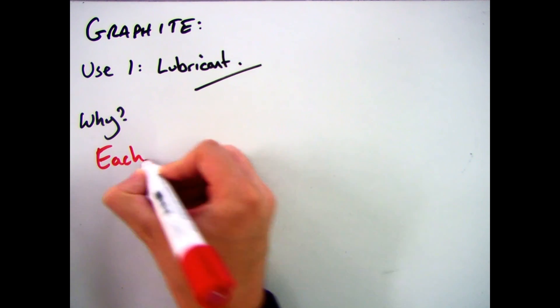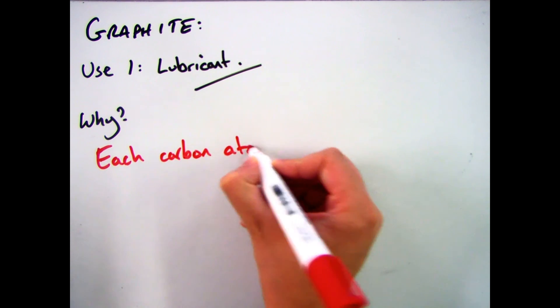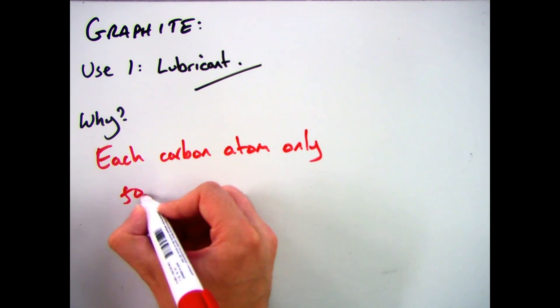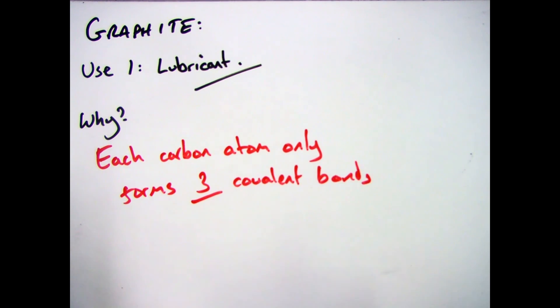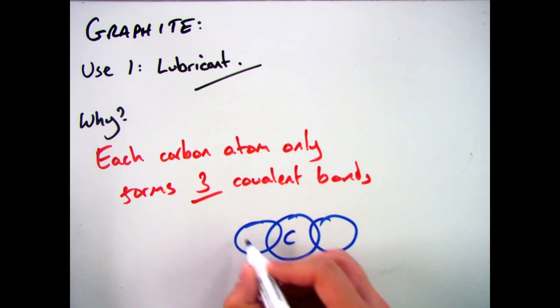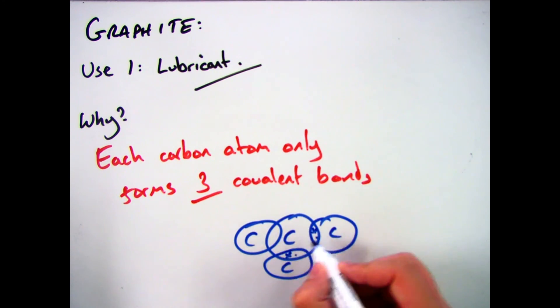So if we move on to the uses of graphite then, there are two you need to know, the first one being that it's used as a lubricant. And to understand why it's used as a lubricant we have to go back to the basic properties. And that is knowing that each carbon atom can only form three strong covalent bonds in graphite.